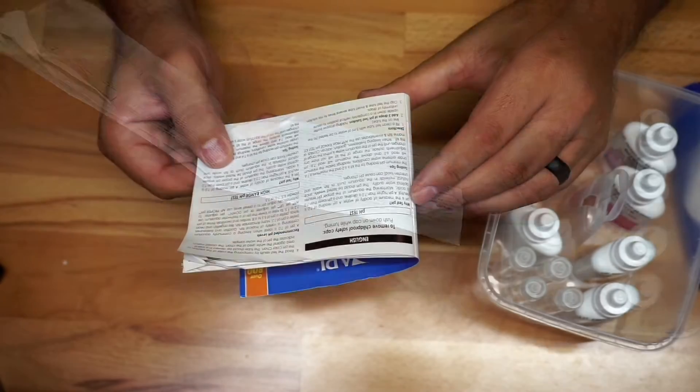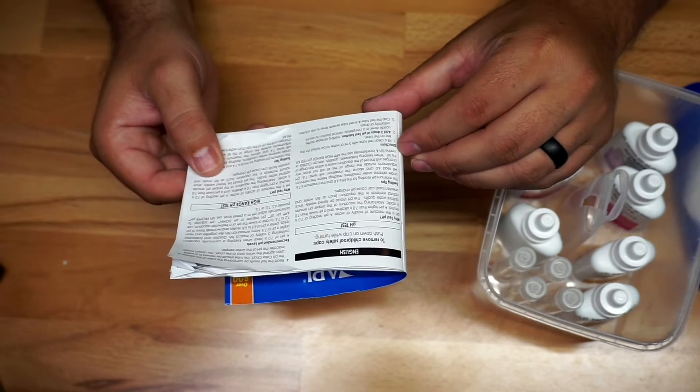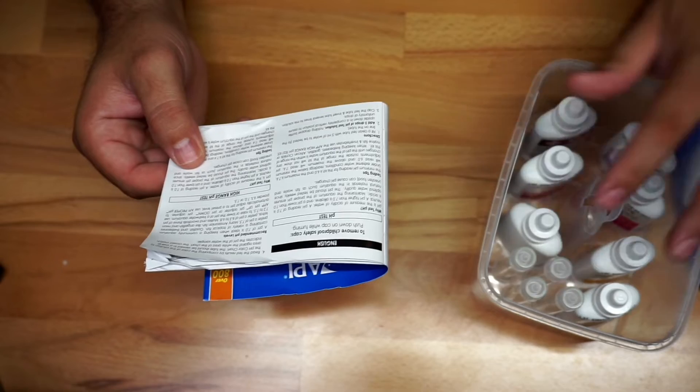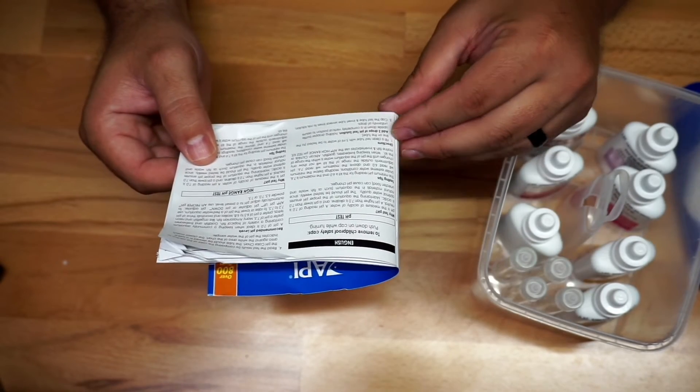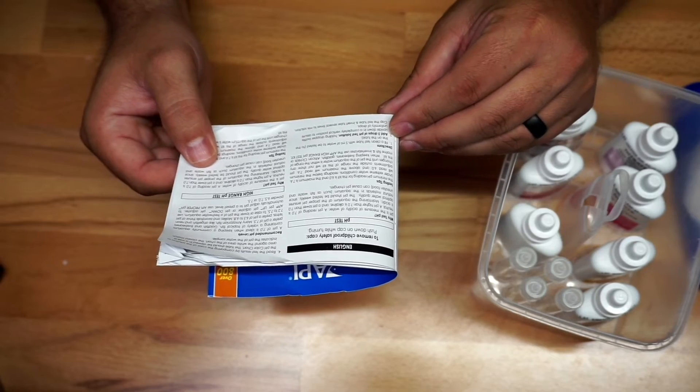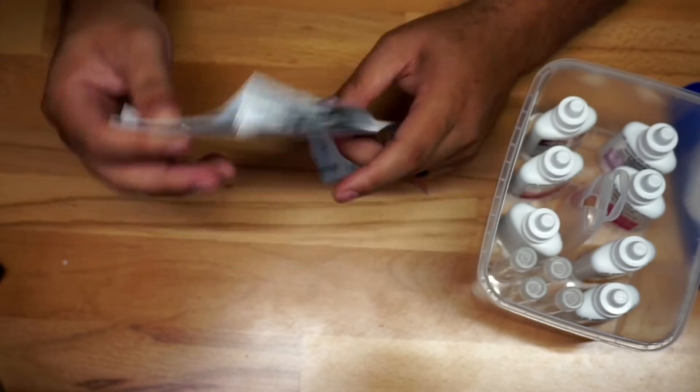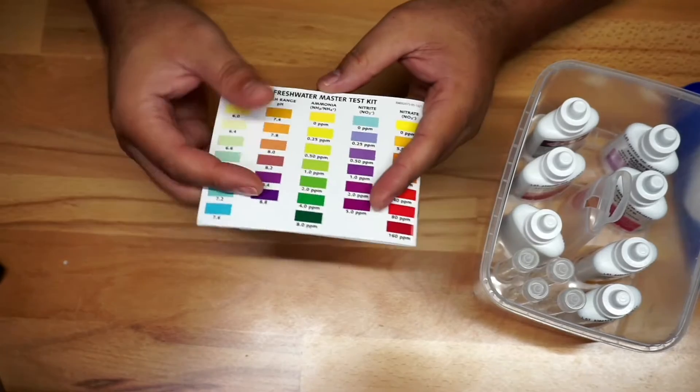So essentially it's very simple to use. For example, I'm going to come up here where it says directions. For the pH testing tip directions, obviously you got to fill one of these bottles, drop several different drops in there, add three drops to the pH test, and then you follow the instructions.